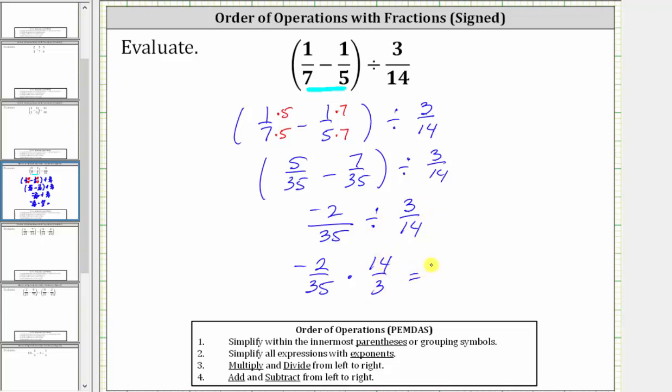And now to multiply fractions, we multiply the numerators and denominators. However, we do want the product in simplified form, so let's first write the product as -2 times 14 over 35 times 3.